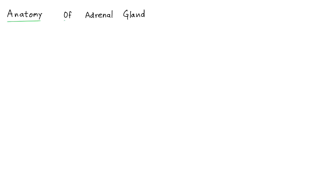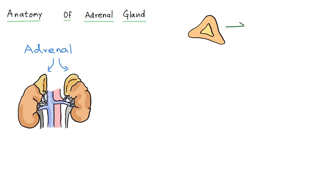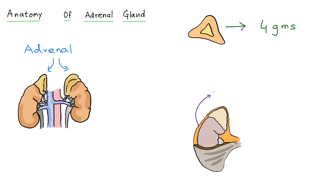Let us understand a few salient anatomical features of the adrenal gland. Adrenal glands are paired endocrine glands present on the superior aspect of kidneys. They weigh about 4 grams each. Along with kidneys, they are surrounded by perirenal fat and Gerota's fascia.